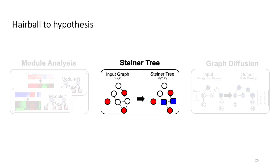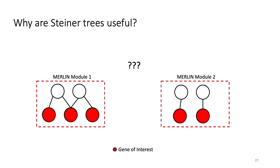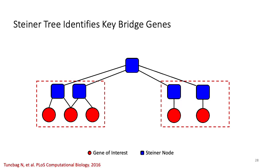I will now discuss how the MerlinViz Steiner tree method can be used for hypothesis generation. As I've mentioned previously, module analysis is a good strategy for finding co-regulated genes. However, this only gives a very shallow insight into the network topology. In order to extend this framework, we have implemented the Steiner tree approximation algorithm. Given a set of genes of related function, the goal of the Steiner tree problem is to find a minimum spanning tree to connect these genes. The intermediate nodes are denoted as Steiner nodes. These nodes are of particular importance to gene regulation because they indicate either shared gene regulators or shared gene targets between modules. The size of the Steiner tree gives some indication of the relatedness between regulatory hubs, which is important when looking at shared regulatory mechanisms.